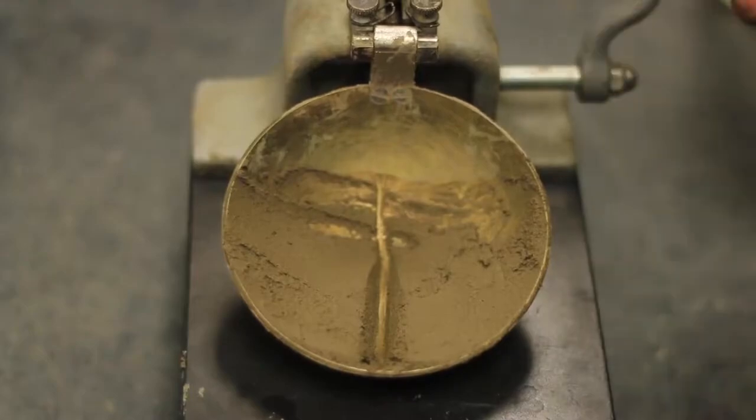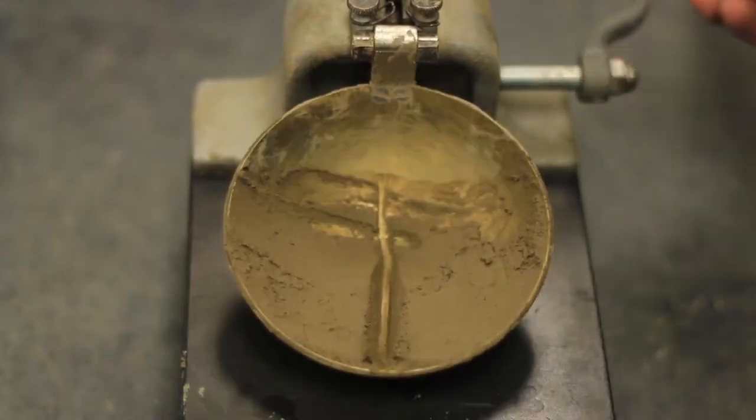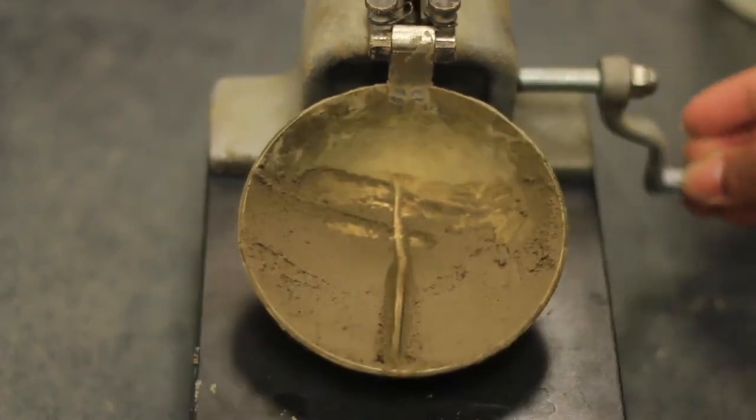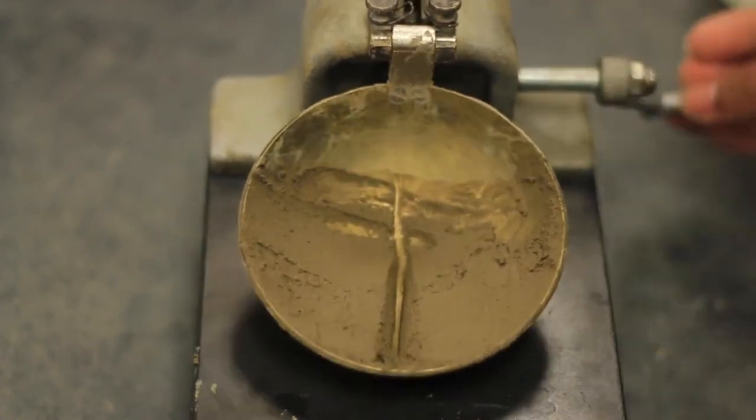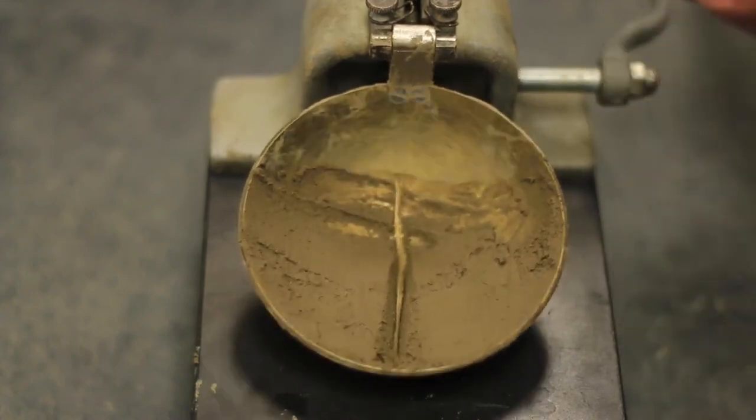Crank the device at a rate of 2 revolutions per second until there is a clear visible closure of half an inch or 12.7mm in the soil pad placed in the cup. Count the number of blows that cause the closure.